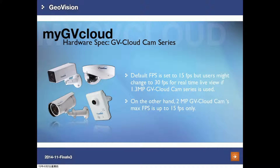For the 1.3 megapixel camera, the default FPS is set to 15, but it is still able to change to 30 if necessary. On the other hand, for 2 megapixel JuviCloud cameras, the default FPS is set to 15 and the maximum FPS is up to 15 only.